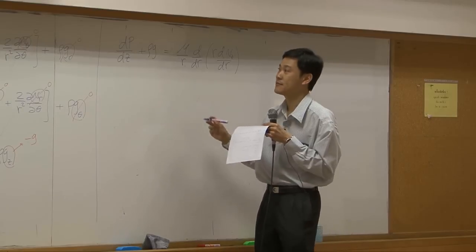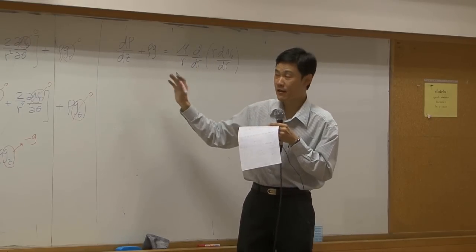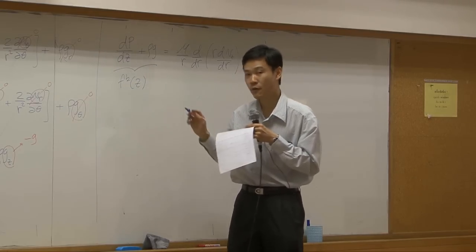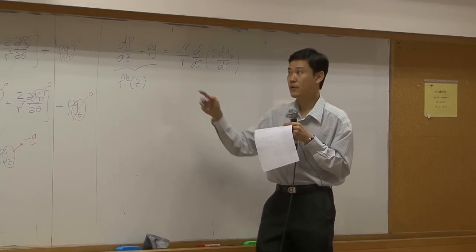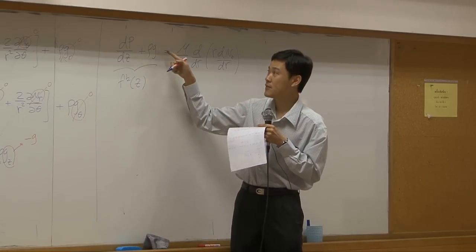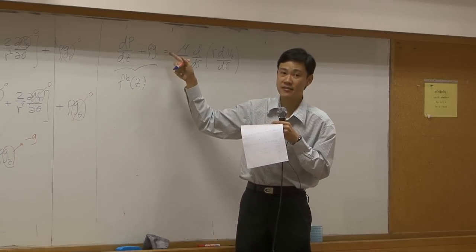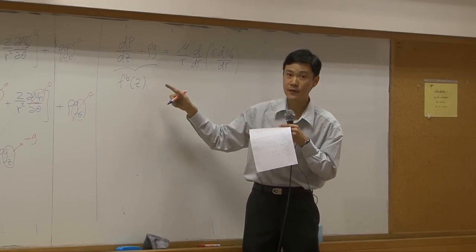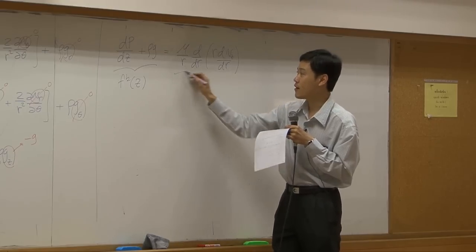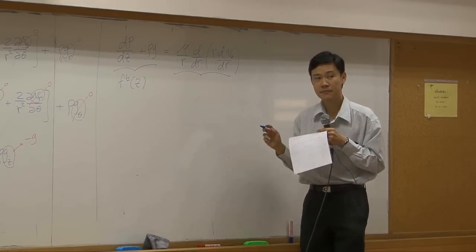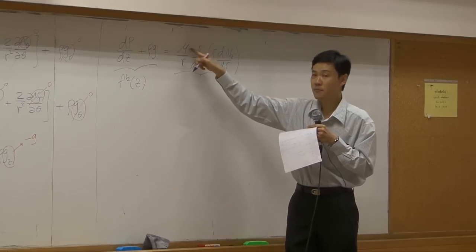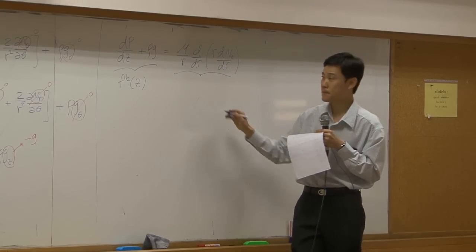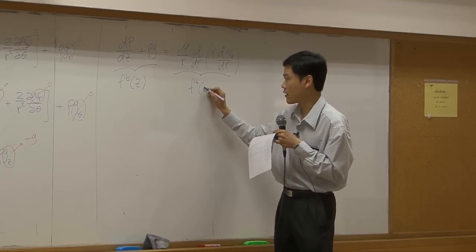The trick is, everything on the left hand side here are function of Z only, right? Pressure does change with respect to Z, rho and G are basically constant. So on the left hand side, it is function of Z. What about on the right hand side? Mu is constant, VZ here is function of R only. So this is function of R only.